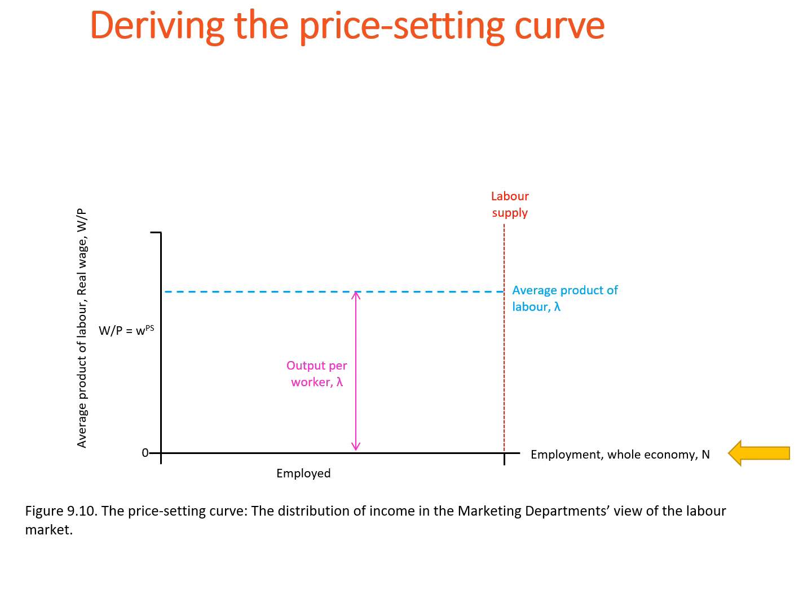We start with the top horizontal blue line. This line shows the firm's revenues per worker in real terms — that is, the average product of labor.